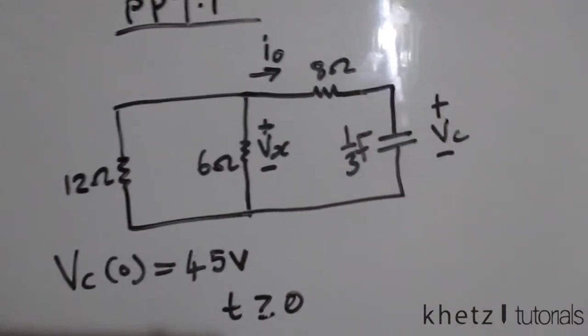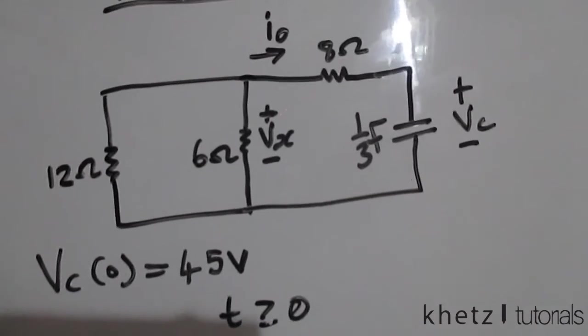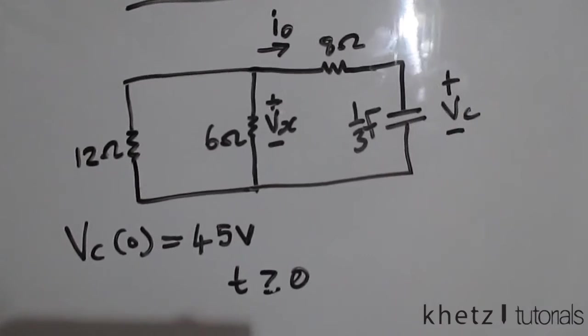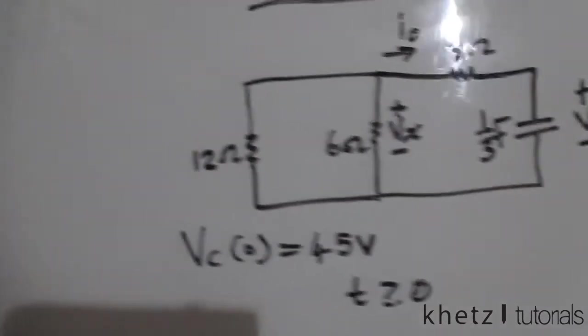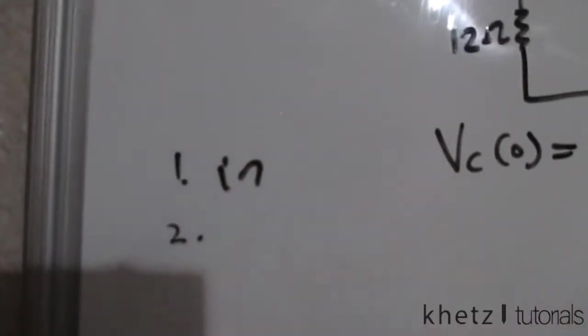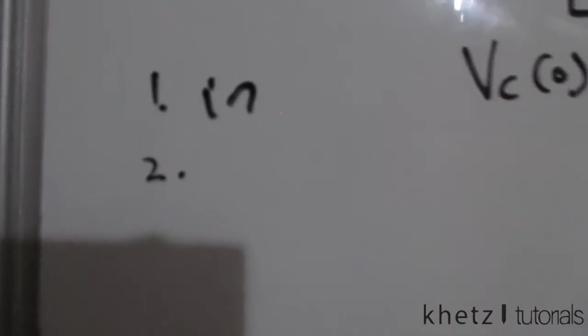This is a source-free RC circuit. There are a few steps we'll follow to solve these kinds of problems. The first would be to find the initial condition. The second would be to find the time constant.